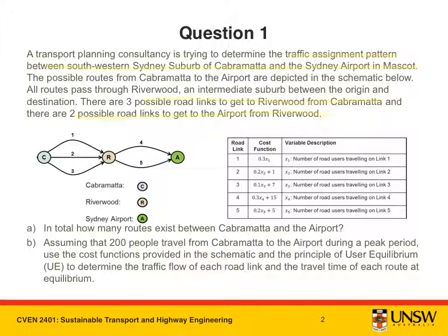Part A: In total, how many routes exist between Cabramatta and the airport? Part B: Assuming that 200 people travel from Cabramatta to the airport during a peak period, use the cost functions provided in the schematic and the principle of user equilibrium to determine the traffic flow of each road link and the travel time of each route at equilibrium.